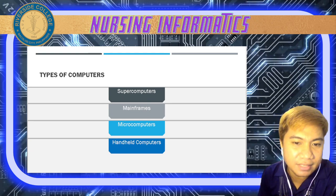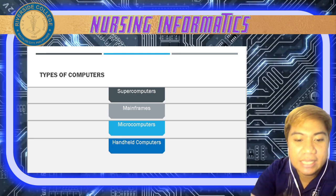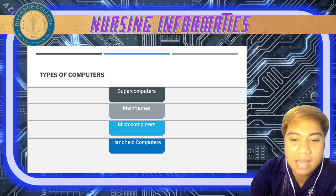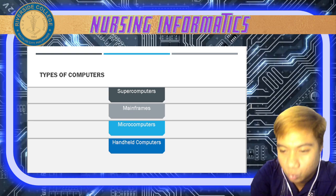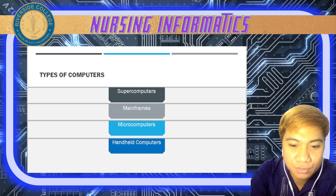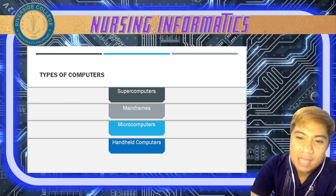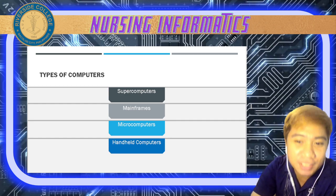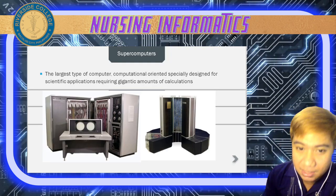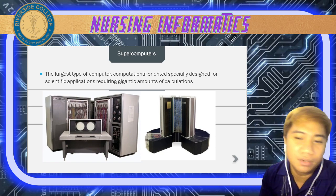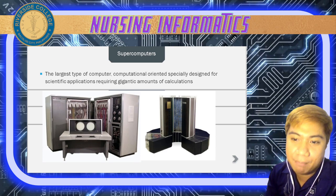Now let's have the different types of computers. Computer technology has evolved from huge room-sized electronic calculators developed with military funding during World War II to pump-sized machines today. Starting with the largest — supercomputers — these are the largest type of computer, specially designed for scientific applications requiring a gigantic amount of calculations.